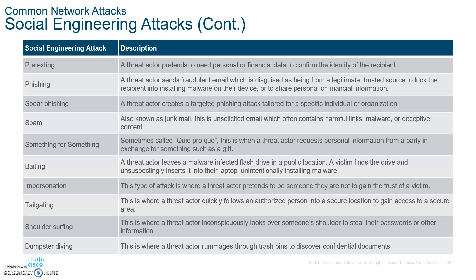Here are the different types of social engineering — please take a snapshot: pretexting, phishing, spear phishing, spam, quid pro quo (I give you something, you give me something), baiting, impersonation, tailgating, shoulder surfing (someone watching you type — could be a camera), and dumpster diving, where someone goes through the trash to gather memos, phone numbers, and addresses, which can then be used to call in and reset passwords.